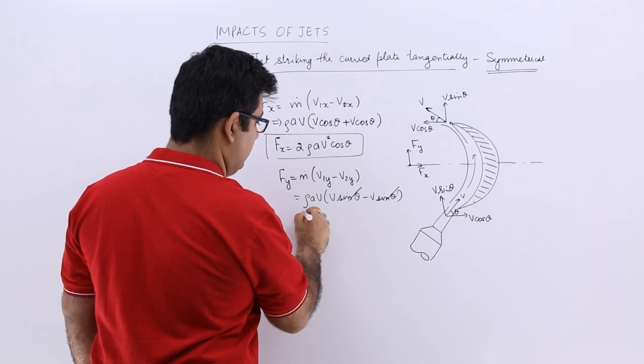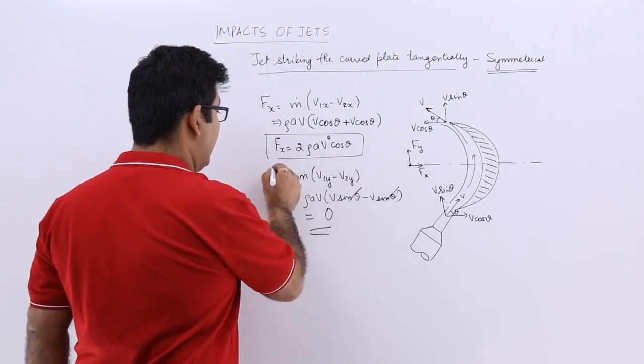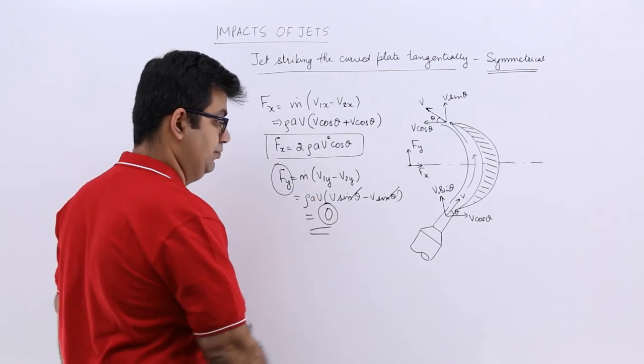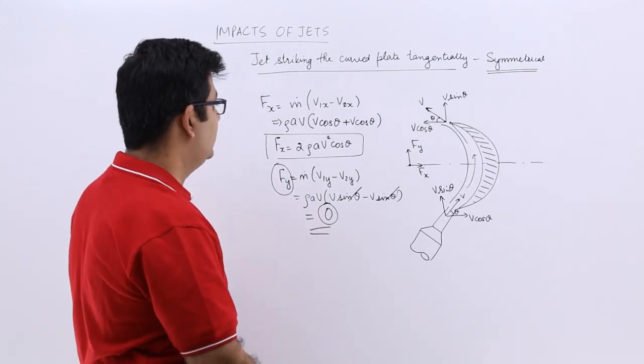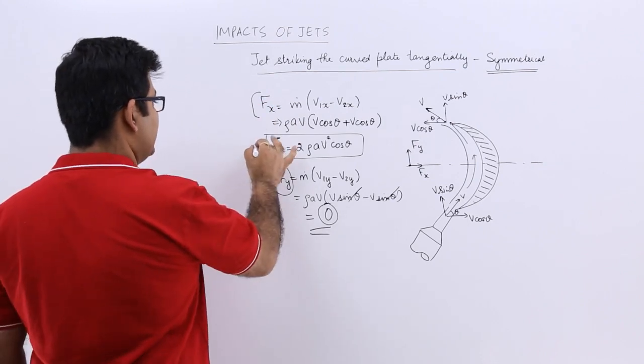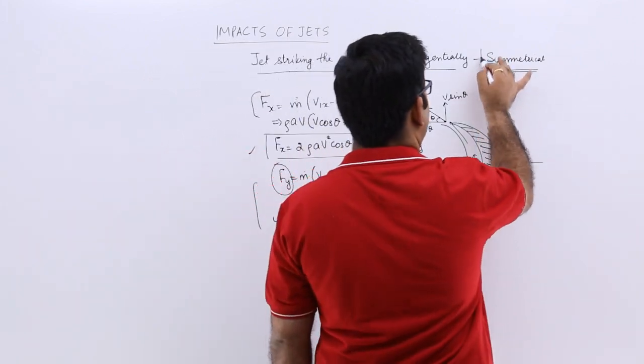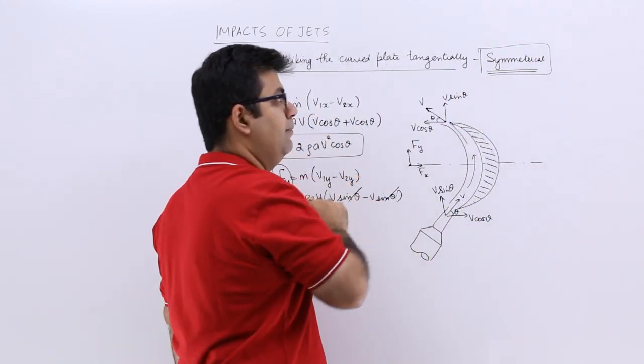They can be cancelled. So your velocity or your force in the y direction is nothing but zero. So this is the expression for Fx and this is the expression for Fy, which is zero, because this is the case of symmetrical blade.